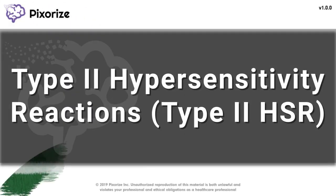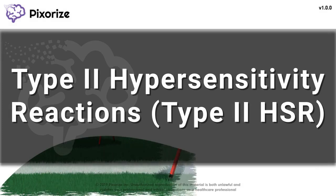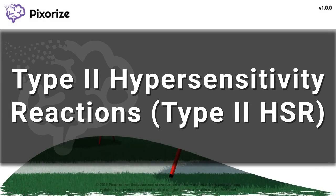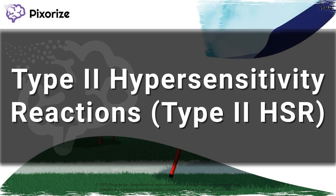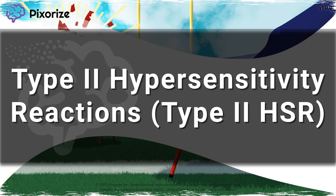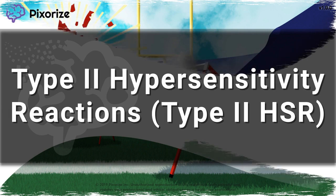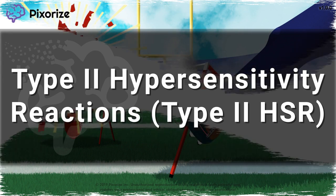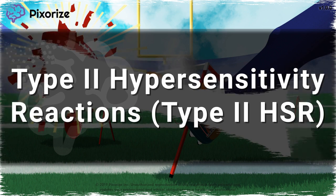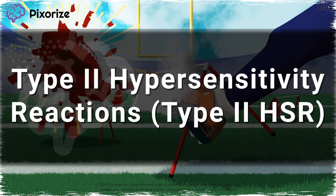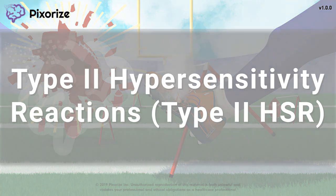Type 2 hypersensitivity reactions are a type of unwanted immune reaction caused by antibodies recognizing antigens on normal cell surfaces. Antibodies attaching to our normal cells results in an autoimmune attack by other parts of the immune system, or impaired function if the antibody binds to a receptor. In this video, I'll share my visual mnemonic to remember all the key details about Type 2 hypersensitivity.